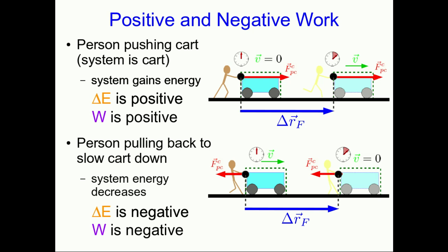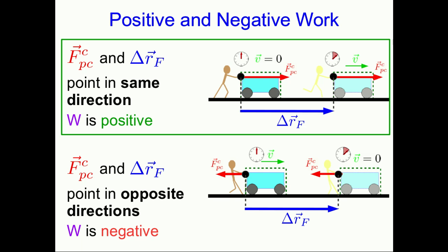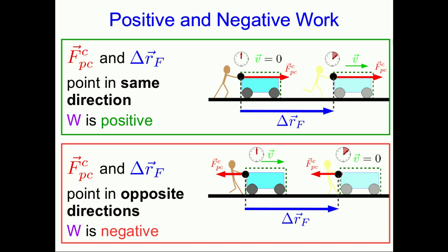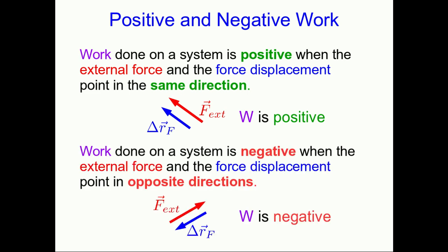Look at how the vectors are pointing. In the first case, where the work was positive, the force that the person exerts on the cart and the force displacement point in the same direction. In the second case, that force and the force displacement are pointing in opposite directions, and the work is negative. This is a general rule: when the force and the force displacement point in the same direction the work is positive, but if they point in opposite directions the work is negative.